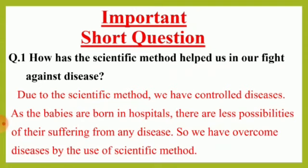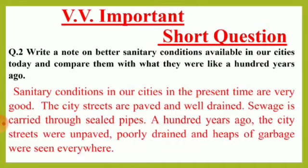The answer is that due to the scientific method (سائنسی طریقہ کار کی وجہ سے), we have controlled diseases (ہم نے بیماریوں پر قابو پا لیا ہے). As babies are born in hospitals, there are fewer possibilities of their suffering from any disease (بہت کم امکانات ہیں کہ وہ کسی بیماری میں مبتلا ہوں). So we have overcome diseases by the use of the scientific method.